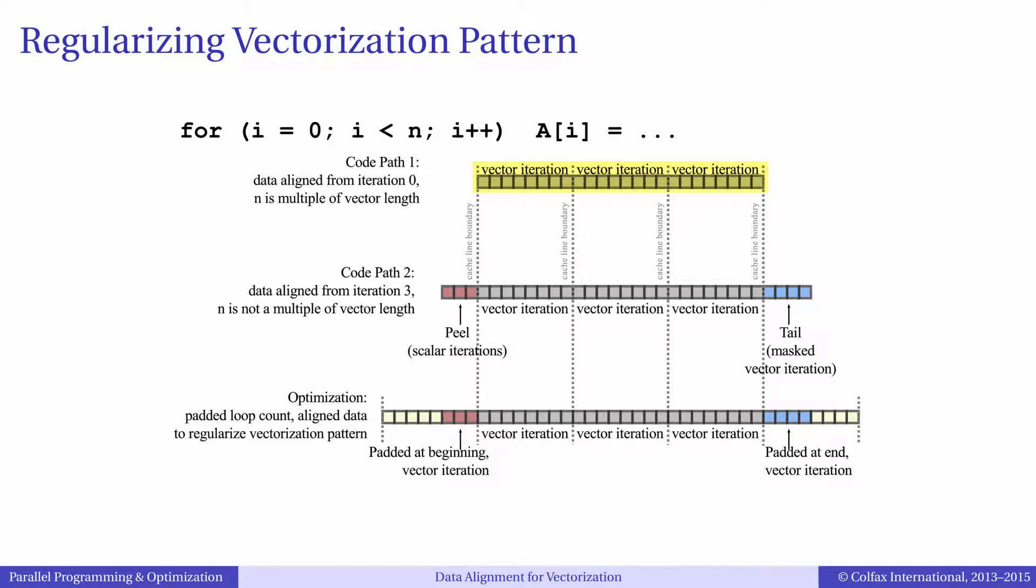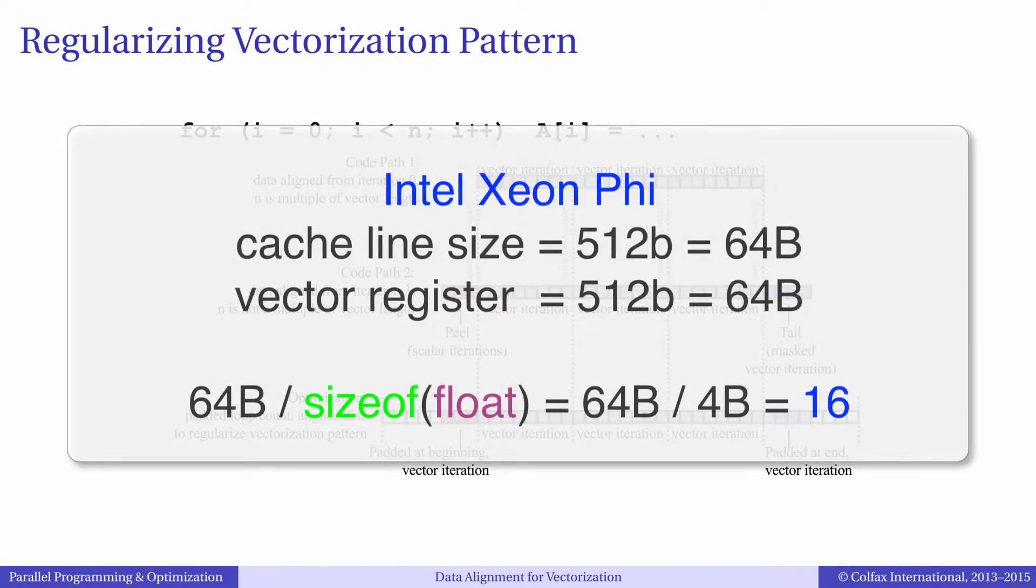That means first, the array must be on an aligned boundary, as we discussed in the previous episode. In addition, we want the number of iterations to be a multiple of the vector length. For example, in the Xeon Phi architecture, in single precision, the loop iteration count must be a multiple of 16.